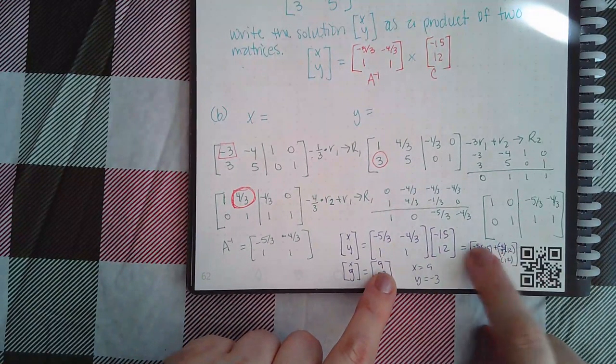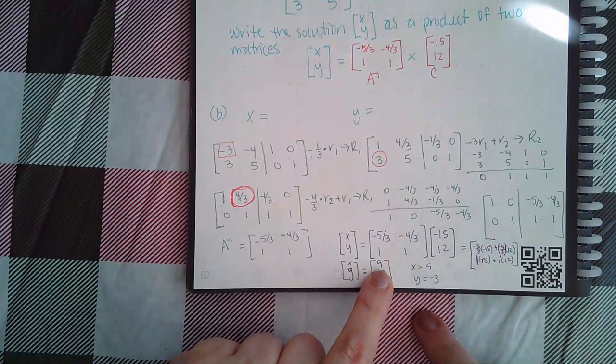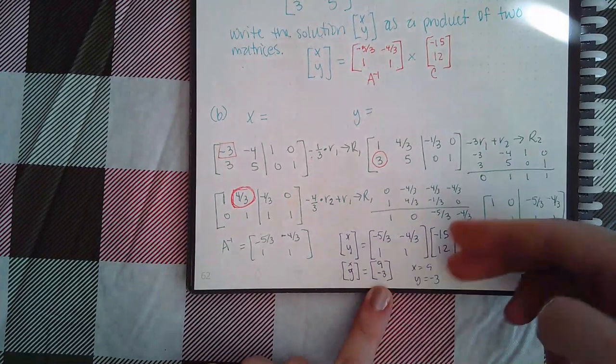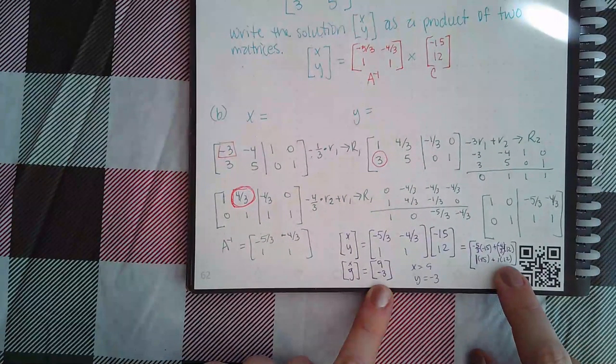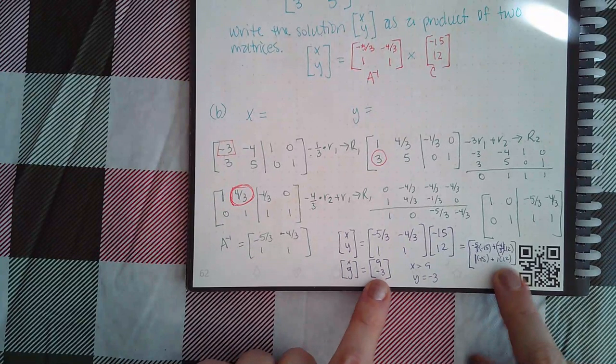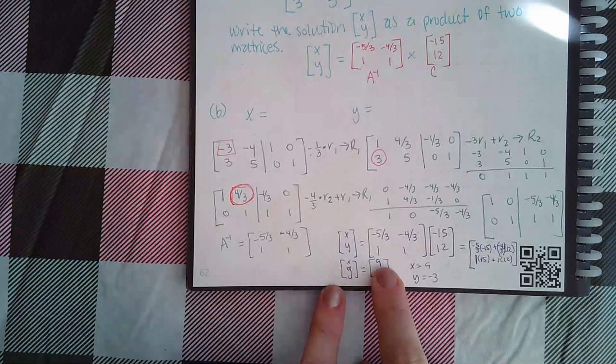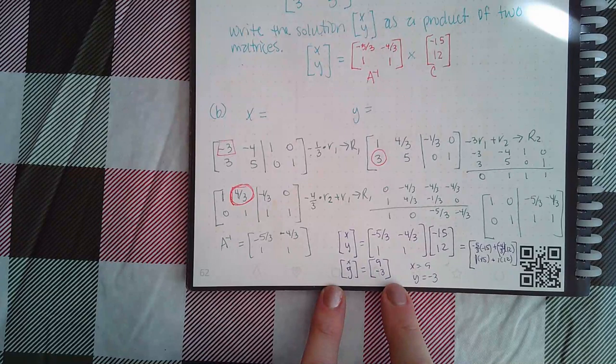So then I typed all this in the calculator and I ended up getting nine. And then one and one times negative 15 and 12, so I ended up getting negative three, which means that x equals nine and y equals negative three.